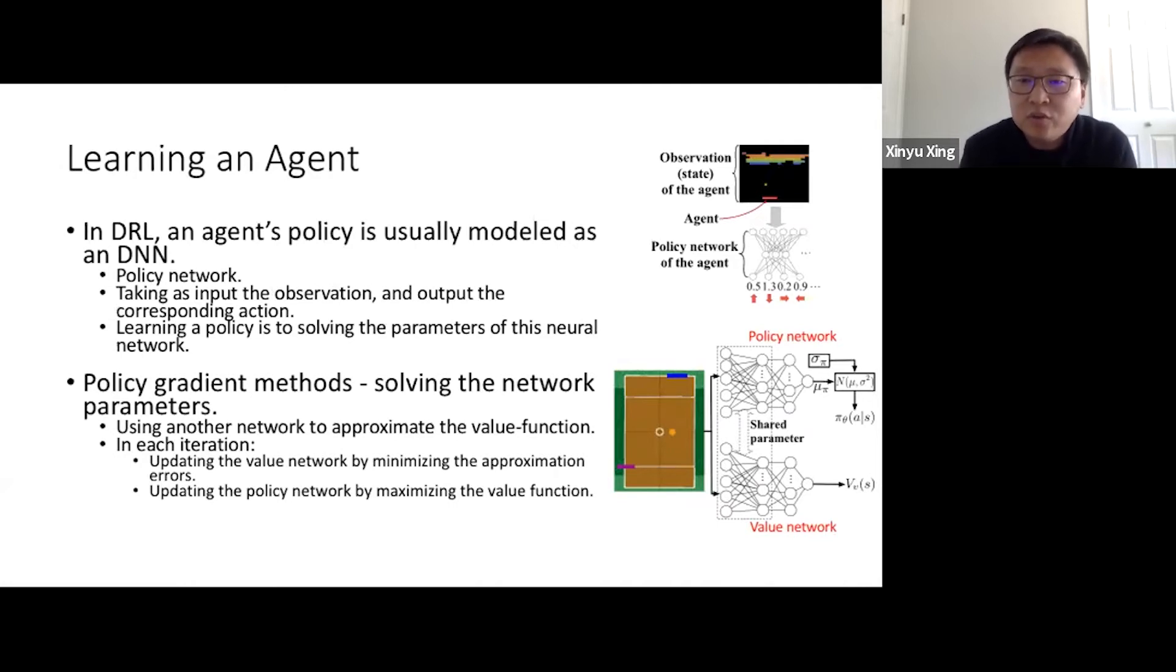Over the past years, to learn a policy network, there are many learning methods. Among those methods, policy gradient approach is the most commonly used. To use policy gradient method, we need to first use another network to approximate a value function. The value function in reinforcement learning takes the responsibility of forecasting the expected total reward that the learning agent could receive at each time step. Using the value function, we can update the policy network by maximizing the value function, and then vice versa, we can use the policy network to help update the value function accordingly. In the learning process, we repeat the value function and policy network update procedure iteratively until we observe the policy gradient method reach convergence.